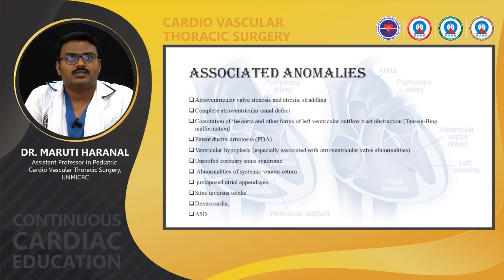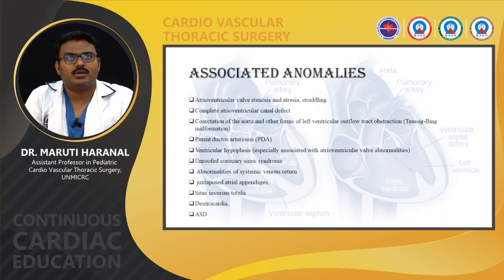Associated lesions include atrioventricular valve stenosis and atresia, straddling, complete atrioventricular canal defect, coarctation of the aorta and other forms of left ventricular outflow tract obstruction (more commonly seen with Taussig-Bing anomaly), patent ductus arteriosus, ventricular hypoplasia, unroofed coronary sinus, abnormalities of the systemic venous drainage, dextroposed atrial appendages, situs inversus totalis, dextrocardia, and ASD.